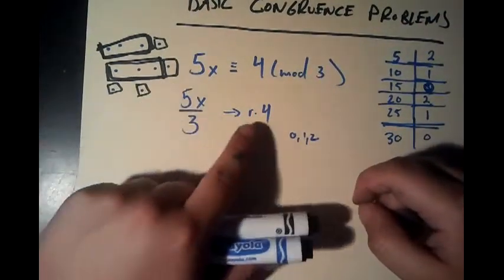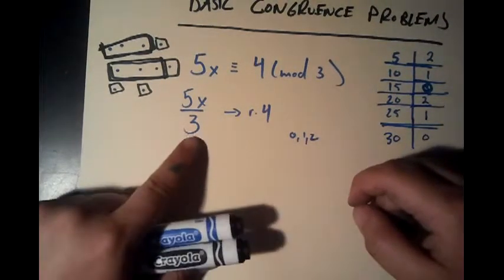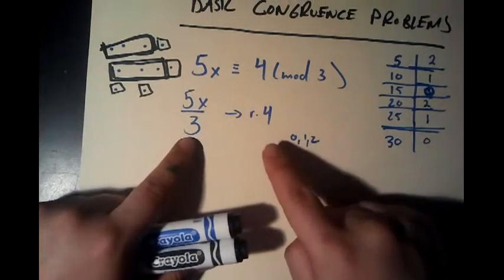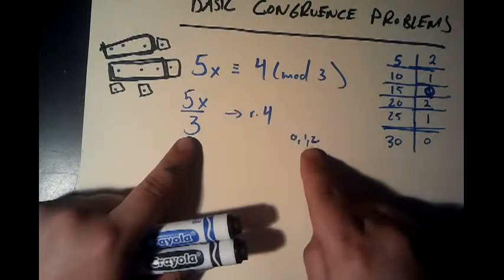So what this problem says is if I take 5x divided by 3 I should get remainder 4. But you see how this is weird because if I divide something by 3 my only possible remainders are 0, 1 and 2. There's no 4.